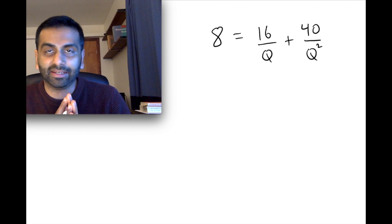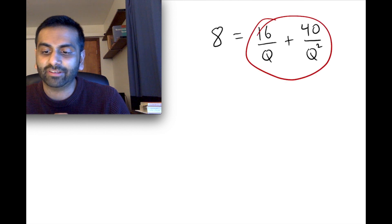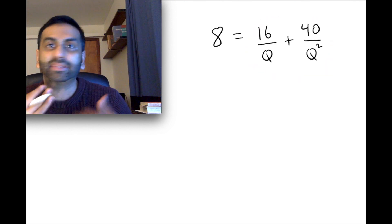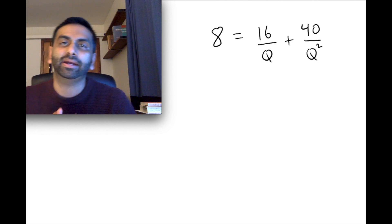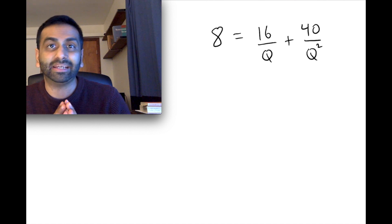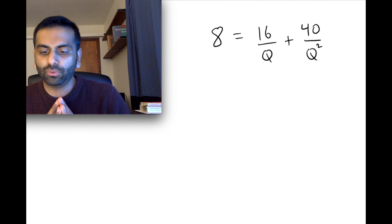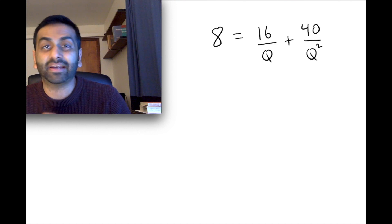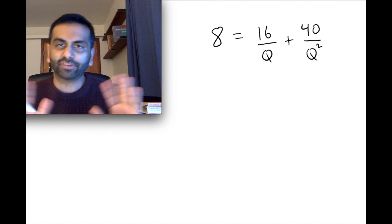So again, this looks like it can get really complicated. You've got to add fractions and you've got to give them a common denominator. And you certainly can do it that way. And you'd get the right answer that way, too. Another thing you could do just looking at this is you could multiply both sides of the equation by q squared. So what would that do? Well, that would basically get rid of all the denominators.